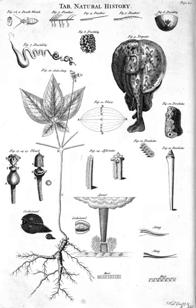Natural history is a domain of inquiry involving organisms including animals, fungi and plants in their environment, leaning more towards observational than experimental methods of study. A person who studies natural history is called a naturalist or natural historian.